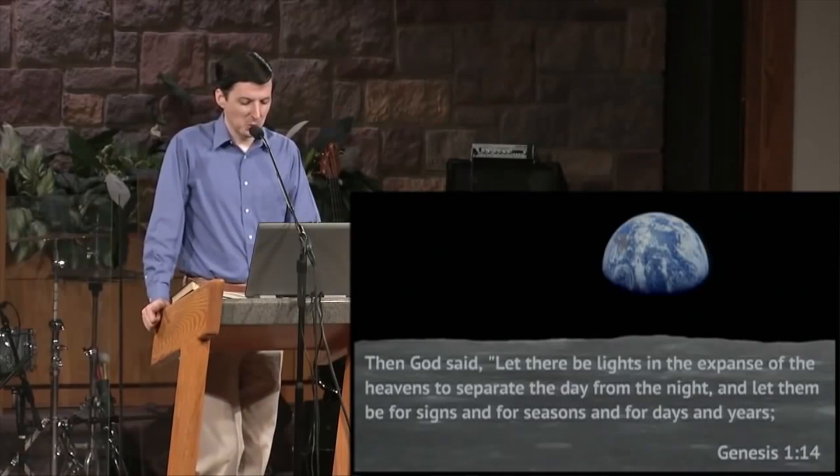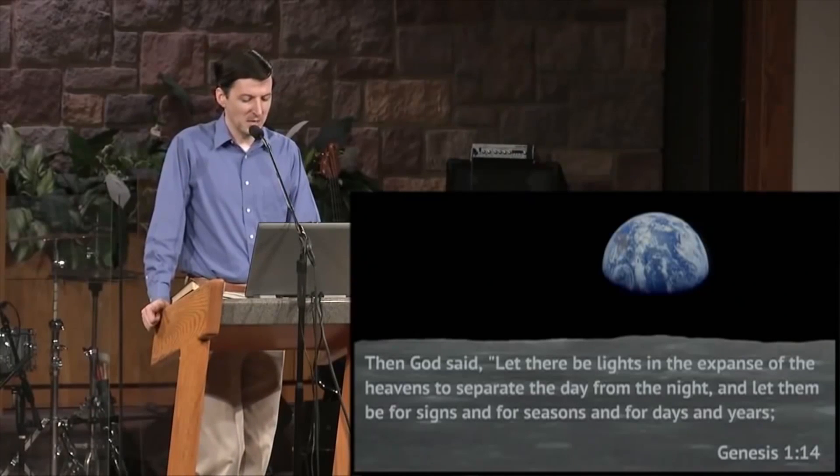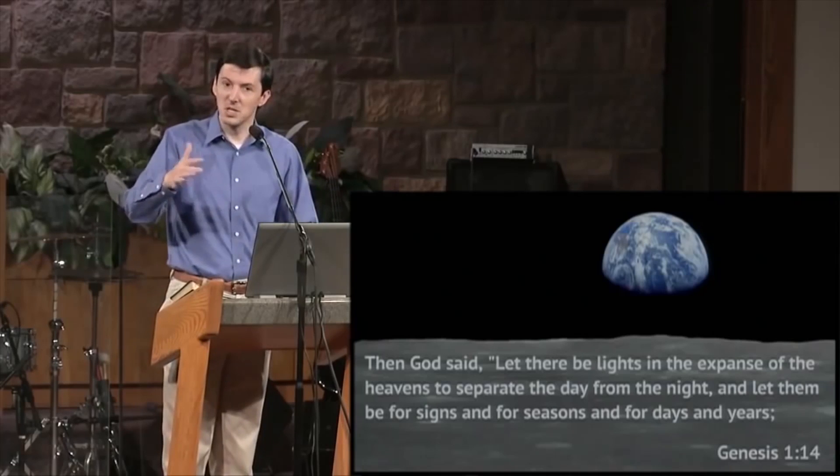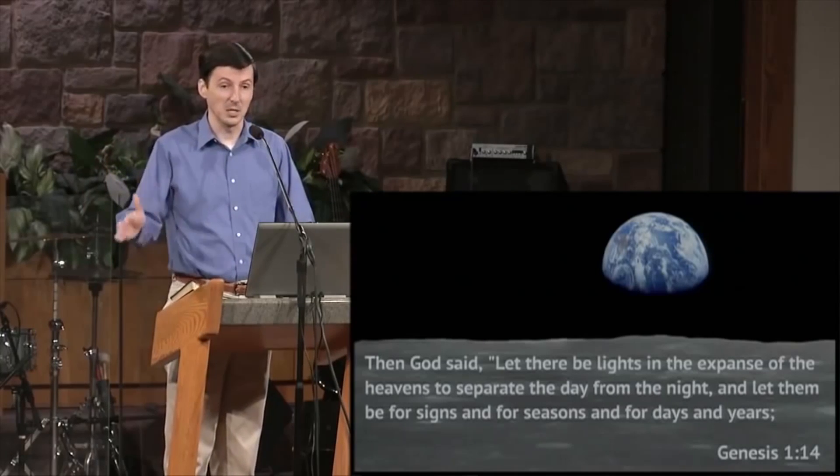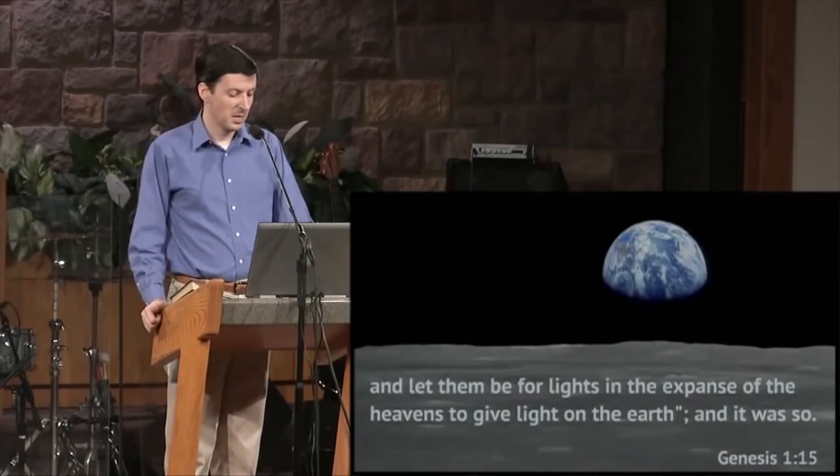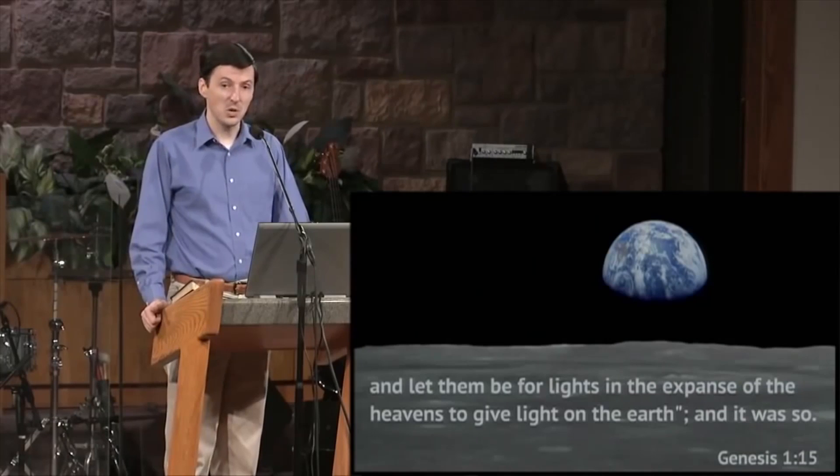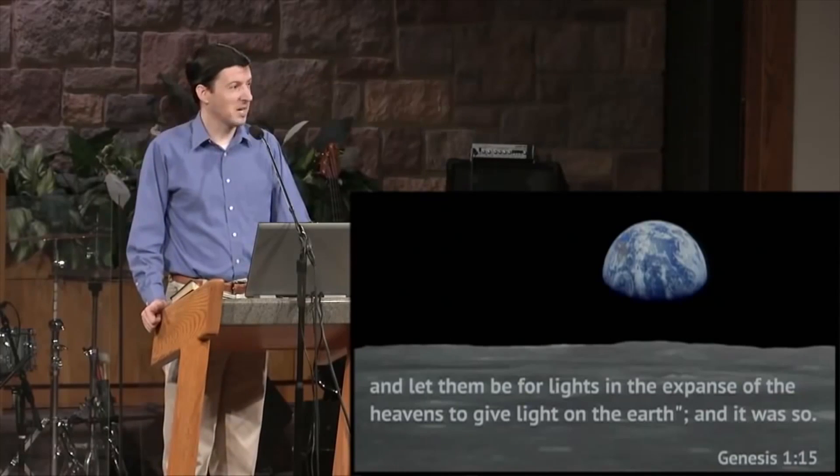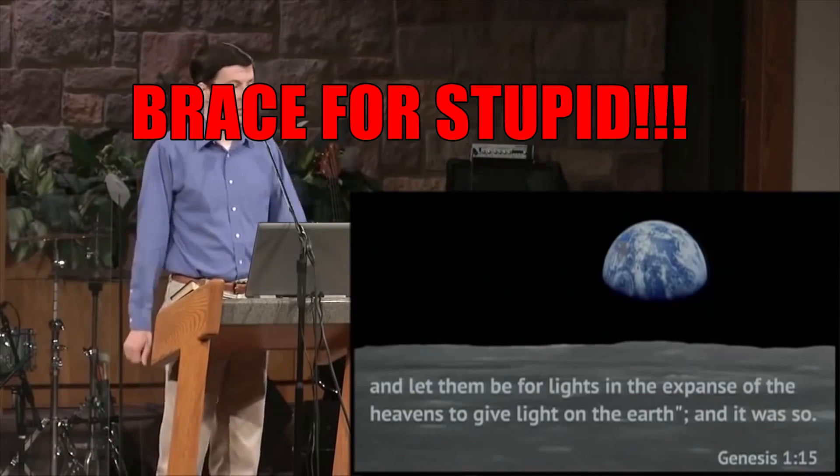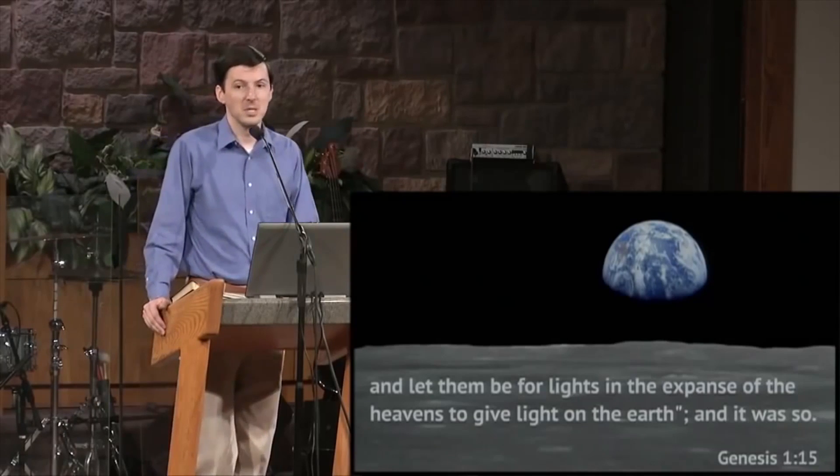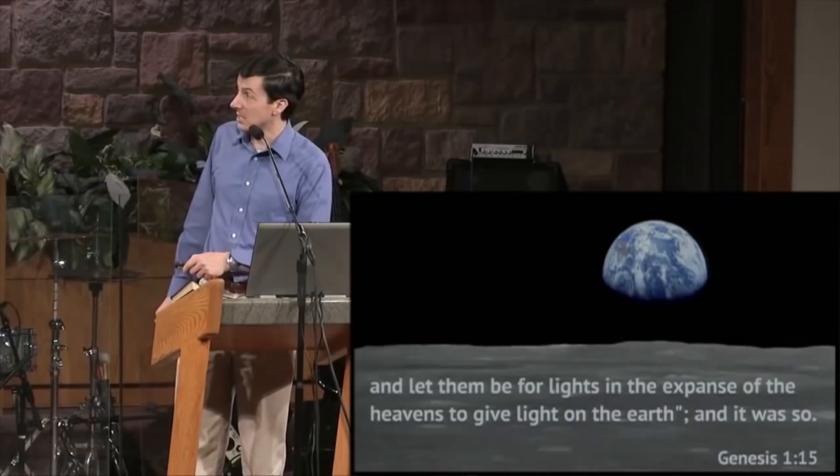But if you take a look at Genesis 1, 14, and 15, then God said, let there be lights in the expanse of the heavens to separate the day from the night, and let them be for signs and for seasons and for days and years. And later we find this is the sun, the moon, and the stars also. The greater light, the lesser light, the stars also. He says, and let them be for lights in the expanse of the heavens to give light on the earth. And it was so. It's that last little phrase, and it was so. What was so? Well, they gave light on the earth. You see, God created them to give light on the earth, and apparently they immediately did.